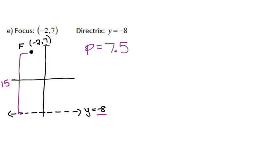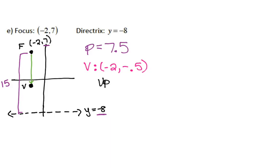So where is my vertex? My focus is at negative 2, 7, and p is 7.5, so I need to move down 7.5 units. Making a vertical movement does not change my x coordinate, so my vertex has the same x coordinate as my focus: negative 2. My focus was at y of 7, but moving down 7.5 units gives me a y coordinate of negative 0.5. So my vertex is at negative 2, negative 0.5.